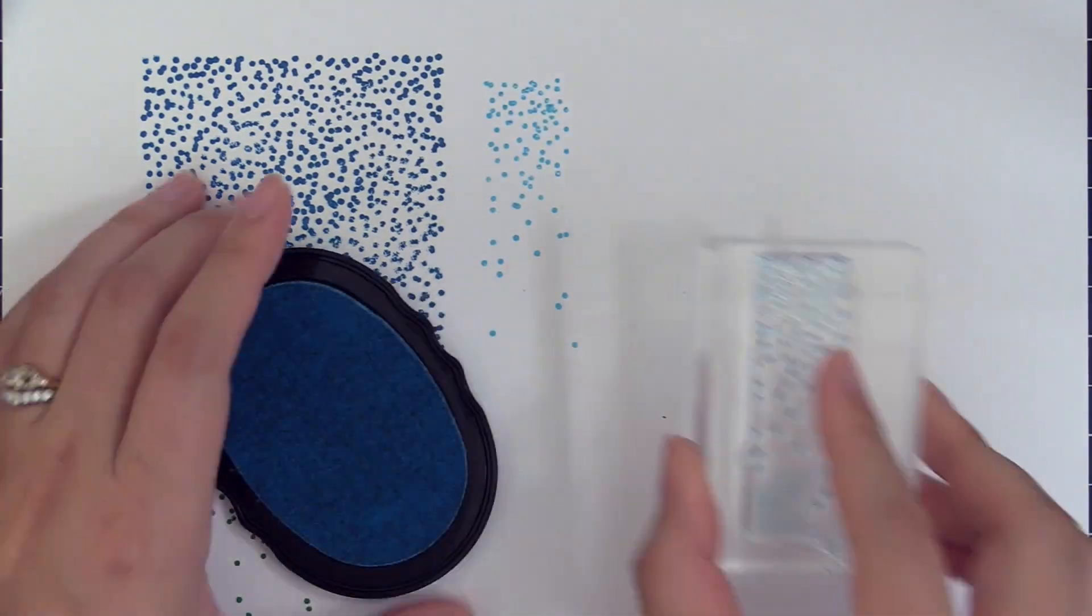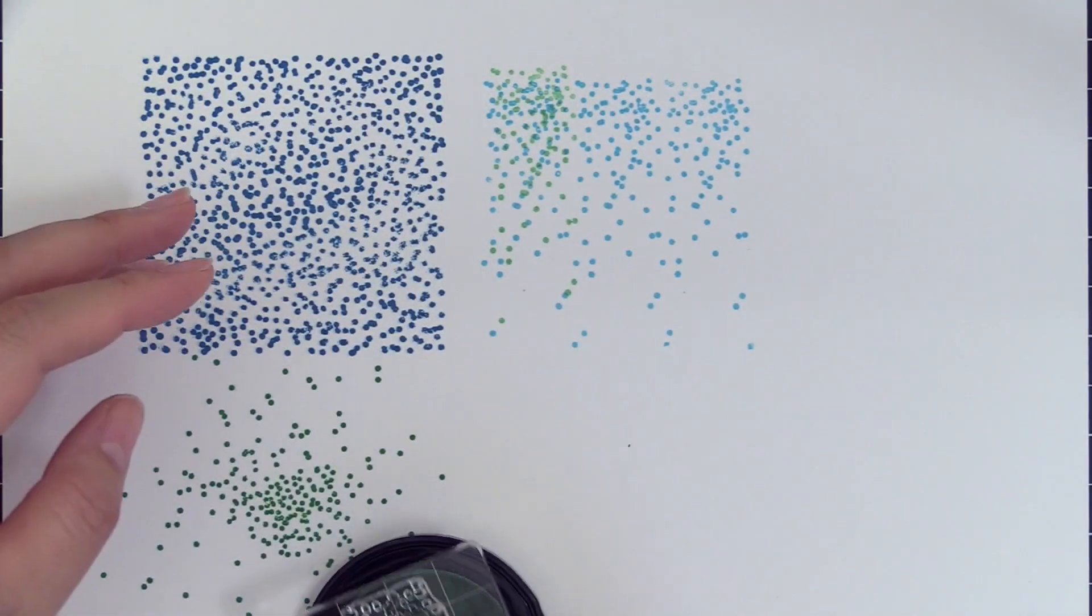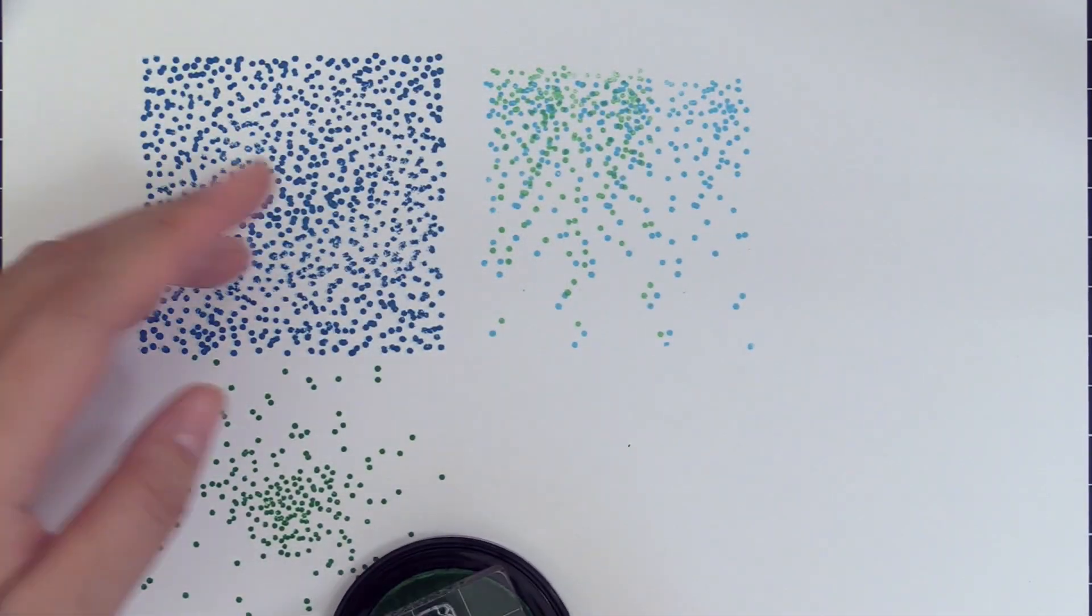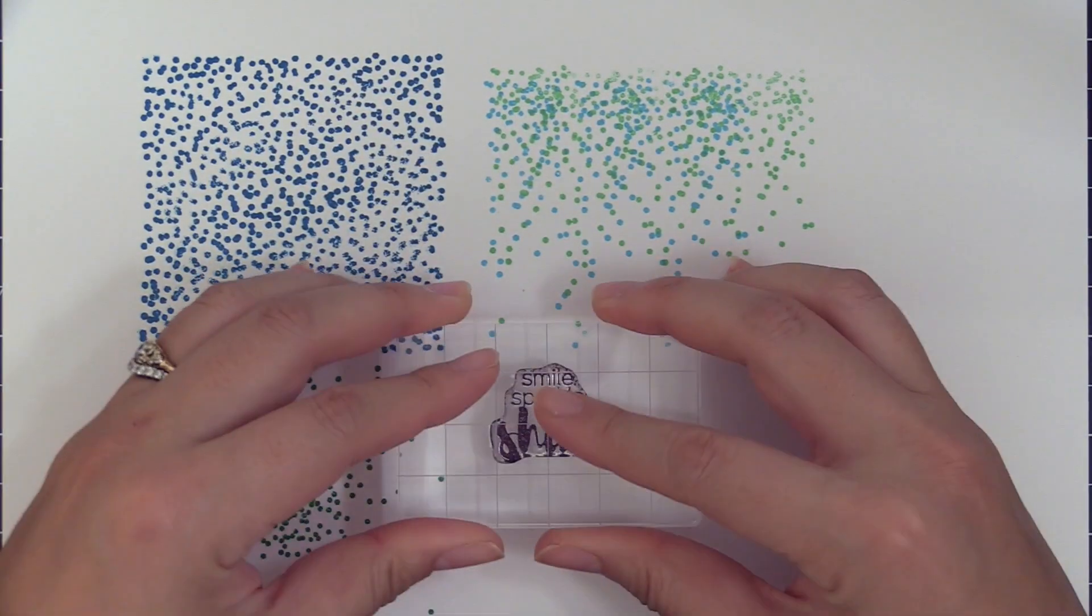Spread kindness with this wonderful and unique stamp set. It features 3 confetti images which can be stamped in a variety of colors for a fun look. Our crystal ink colors are perfect inks to use these stamps with.